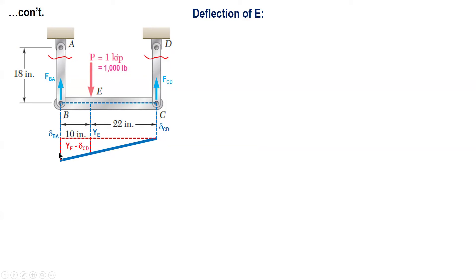And then for this one, it's delta BA minus delta CD. And after here, ratio and proportion or similar triangles, vertical over horizontal equals vertical over horizontal. And you have all the values except Y sub E.